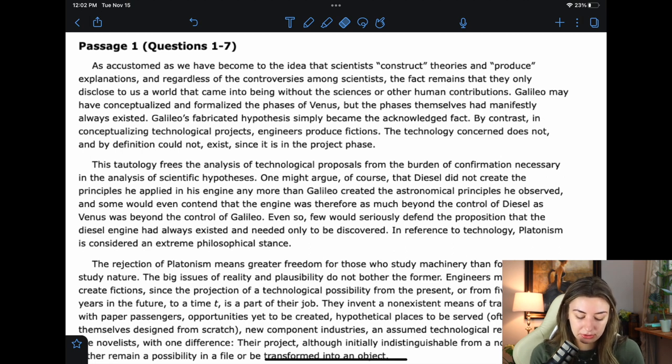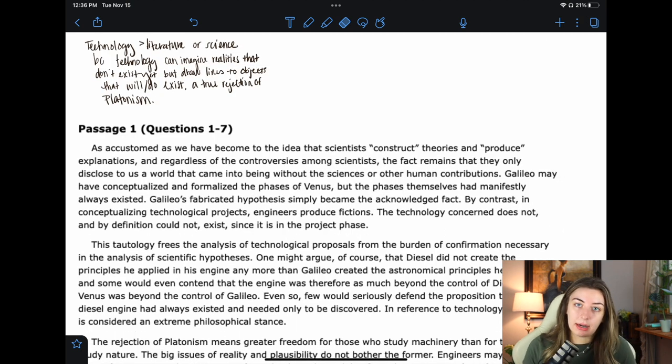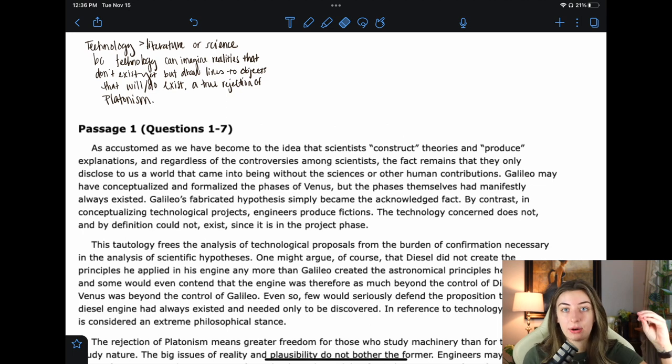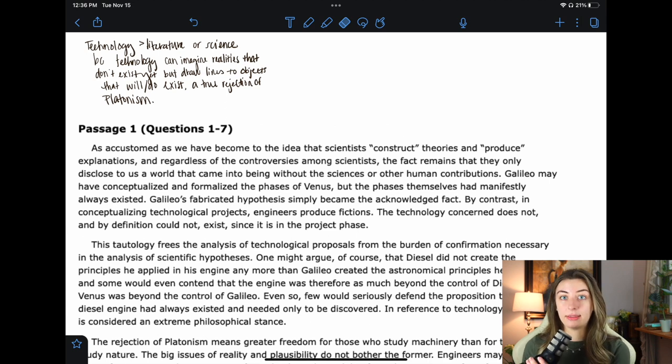You have got to be kidding me. A fiction with a variable structure. It is this flexibility to which we must aspire in tracking a technological project. Now let's wrap up all of the arguments that we were given and that amended main idea that we had and put it into a true main idea and include the tone of the author, what the author likes and dislikes. Obviously, dislike sciences, likes technology. So you can see at the top here that I kind of already wrote my main idea. I said, technology is greater than literature or science because technology can imagine realities that don't exist yet, but draw lines to objects that will or do exist. A true rejection of Platonism.